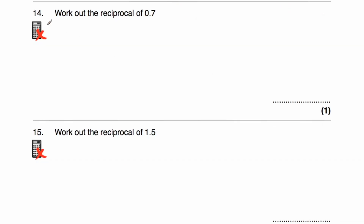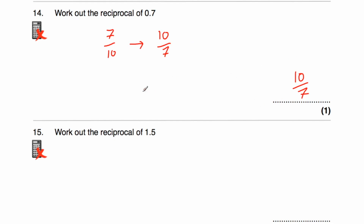Question 14: find the reciprocal of 0.7. That is 7 tenths, or 7 over 10. Finding the reciprocal by flipping it over gives 10 over 7 — so the answer is 10 sevenths. And if we multiply 7 tenths by 10 sevenths, we get 70 seventieths, which is 1. As a mixed number: 7 into 10 goes once, remainder 3, so 1 and 3 sevenths.